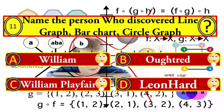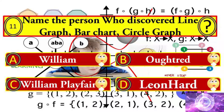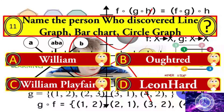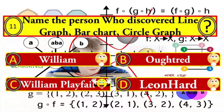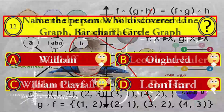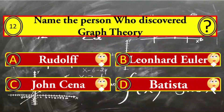Question number eleven: name the person who discovered the line graph, bar chart, and cycle graph. Your options: A) William, B) Outer, C) William Playfair, and D) Leonhard. William Playfair is the right answer.